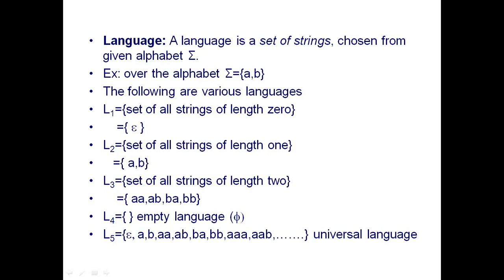Language L1 is the set of all strings of length 0. Length 0 means empty string epsilon, so L1 = {epsilon}. Language L2 is the set of all strings of length 1 over alphabet {a, b} — only a and b are possible, so L2 = {a, b}.